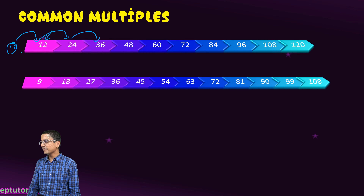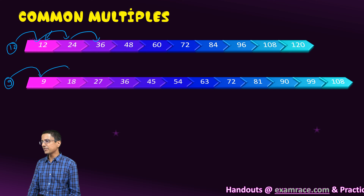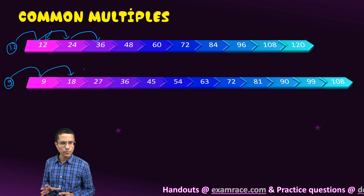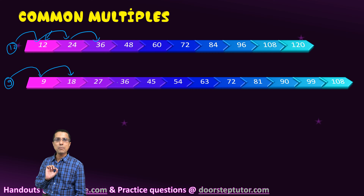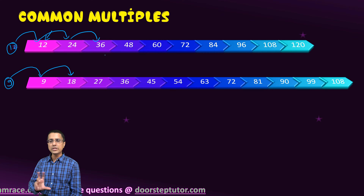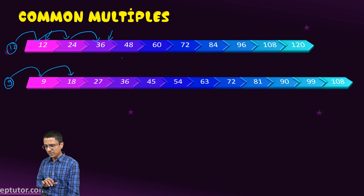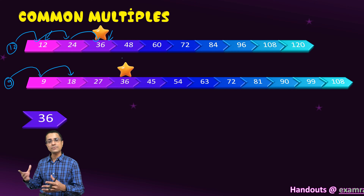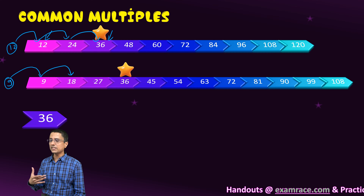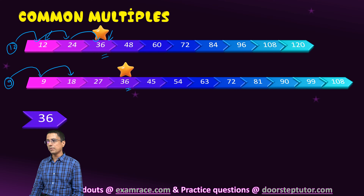Similarly, to write down the multiples of 9, all I have to do is replicate the table of 9: 9, 18, so on and so forth. The concept of multiples itself is very simple. To get to the common multiples, all I have to do is notice that when I look at the multiples of 12 and the multiples of 9, certain multiples appear in both — these numbers are known as the common multiples.